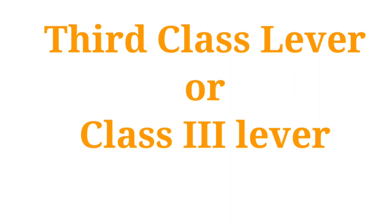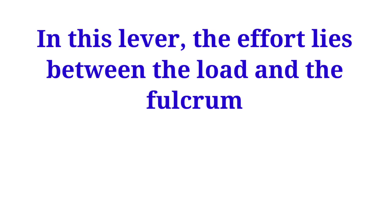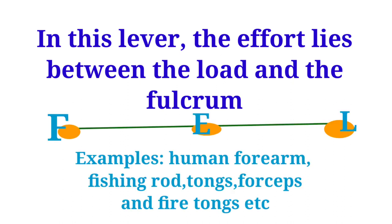In a third class lever, the fulcrum is at one end, the load is at the other end, and the effort is in between. In this lever, the effort lies between the load and the fulcrum. The human forearm is the best example of a third class lever. Other examples include fishing rods, tongs, forceps, and fire tongs.